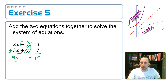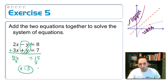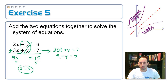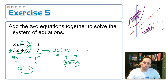I'll divide both sides by 5 and I get x is equal to 3. Am I done? No. Now stick that back into one of the original equations. Let's stick it into the bottom one since y is positive. I'd have 3 times 3 plus y is equal to 7. That's 9 plus y equals 7. Subtract the 9 over, so y is equal to negative 2. Write your answer as an ordered pair: 3, negative 2.